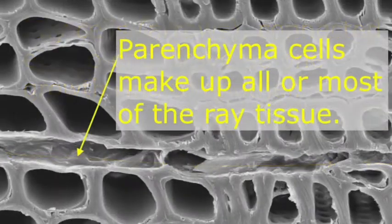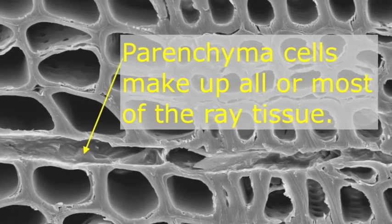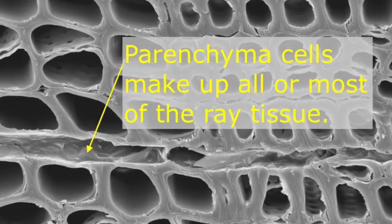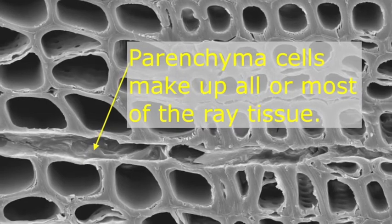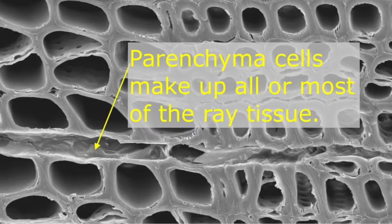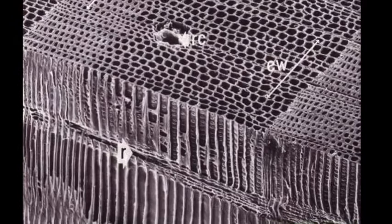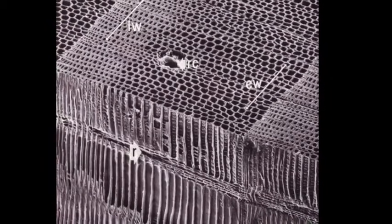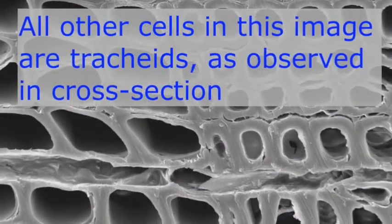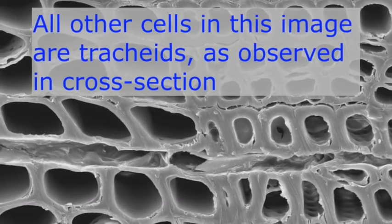Note that most of the ray tissue is composed of a type of cell that we call a parenchyma cell. Parenchyma cells function to transport nutrients along the rays, but some parenchyma cells also store those nutrients at times of the year when nutrient storage is needed. All the rest of the cells in this softwood block are known as tracheids, which are the long thin cells that provide the strength of the wood but that also function to conduct sap upward in the tree. The rays are connected to other cells in the wood such as the tracheids so that sap and nutrients can pass from one cell type to the other.